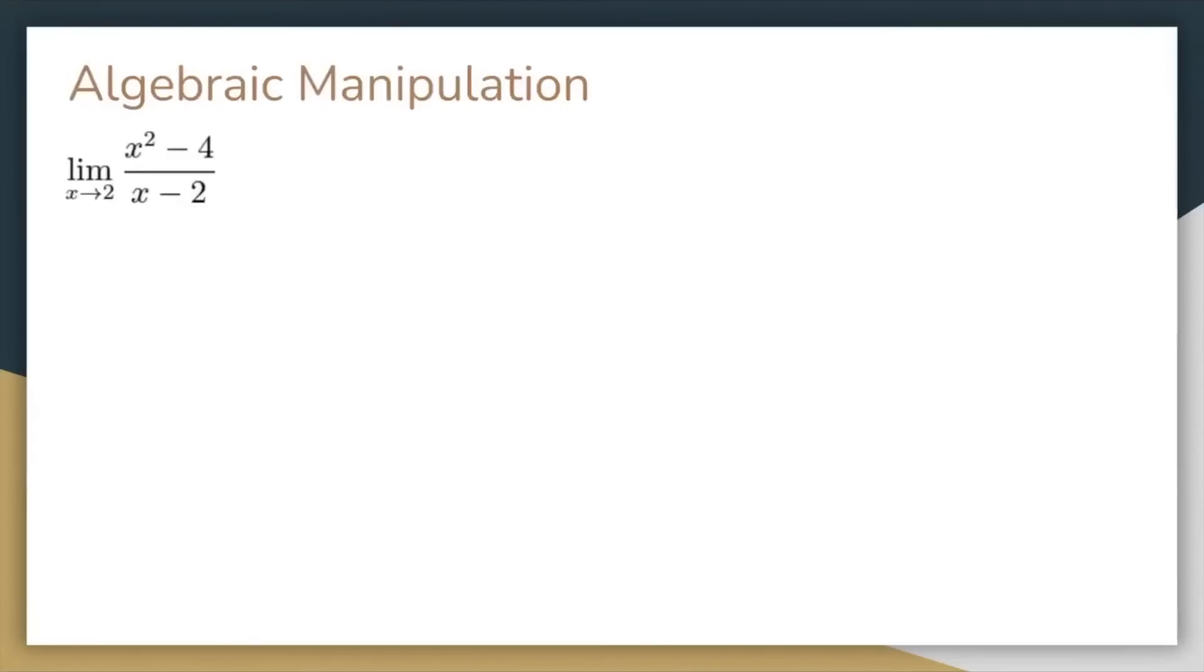Here's another example where you can't use direct substitution. If you do, you get zero divided by zero. However, you can factor the numerator and cancel out like terms, which turns the function into x plus two. Now you can use direct substitution, and you get the answer of four.